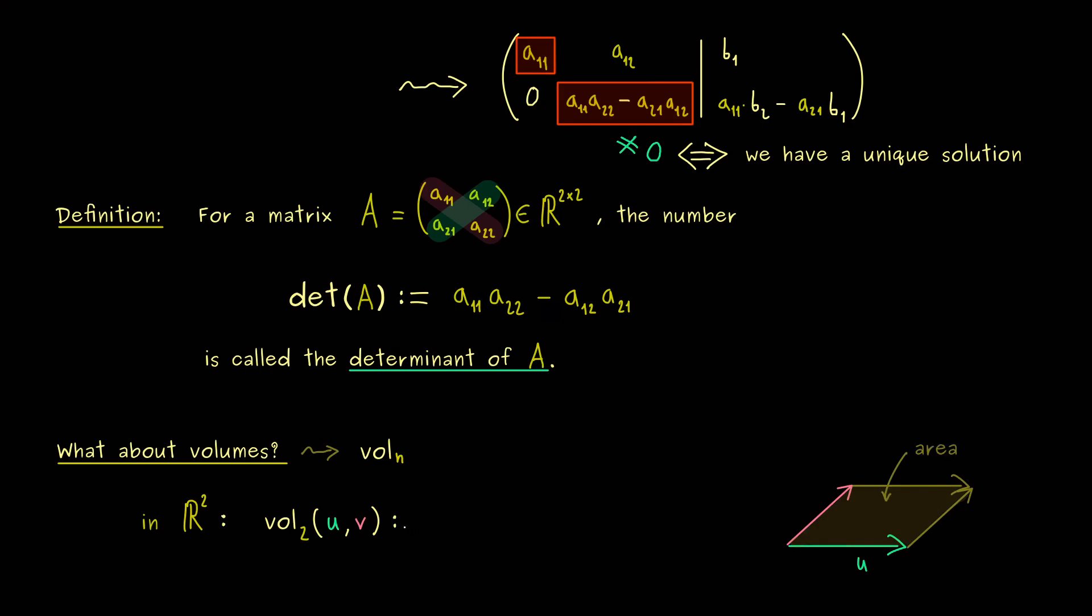Hence, we can simply define the volume function of two vectors should be simply the area of the parallelogram. However, you might already know we also want to bring in a sign for this volume function. Therefore, we would say it's the orientated area of the parallelogram. This means the area could also be negative if we have a negative orientation.